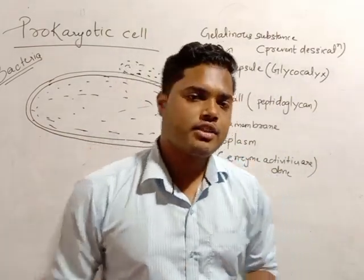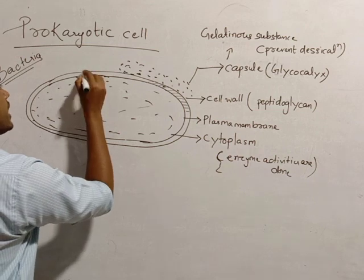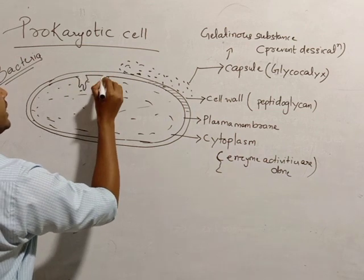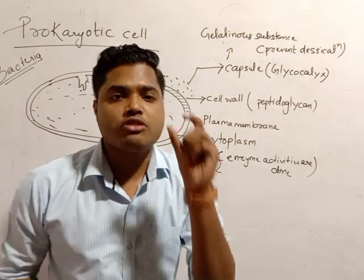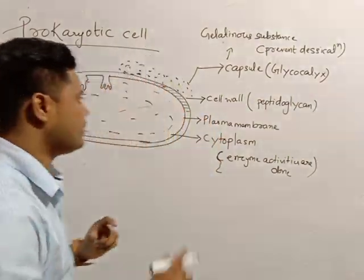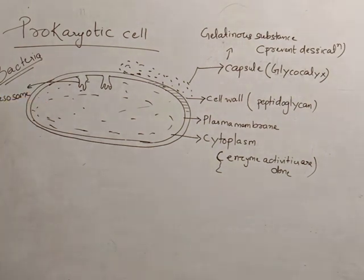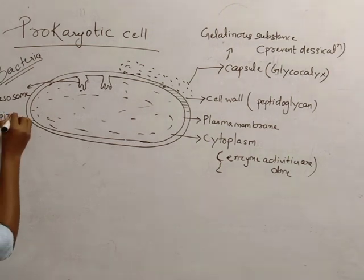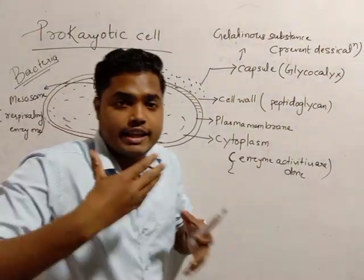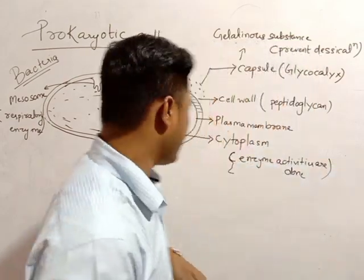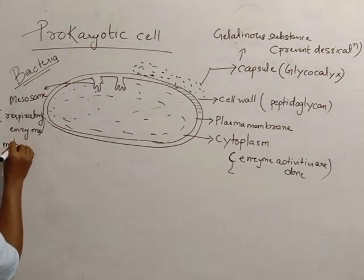Chemical reactions occur in the cytoplasm. Next, in the plasma membrane, there is an infolding structure. The infolding structure of the plasma membrane is known as mesosome. Mesosome has respiratory enzymes, which are the cell respiratory enzymes. This is like mitochondria.